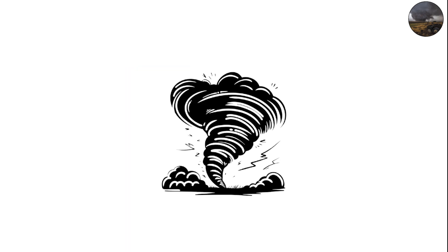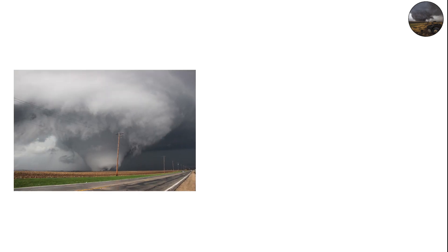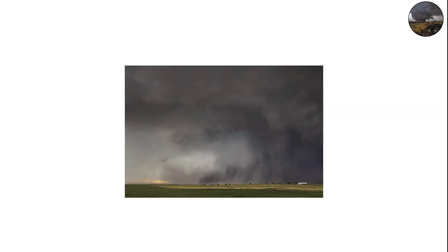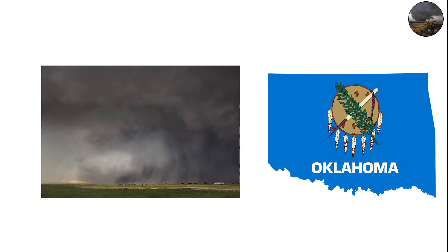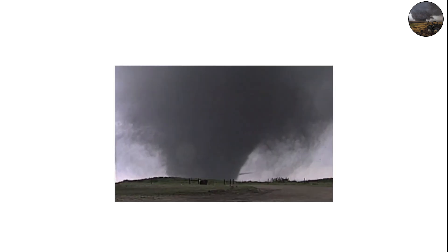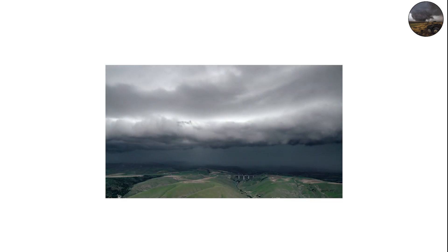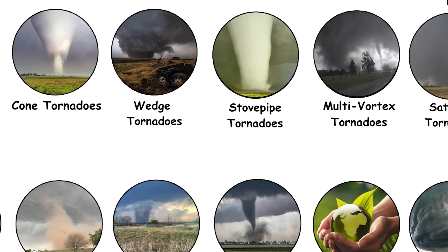These tornadoes are often the most violent, with EF4 or EF5 strength winds exceeding 200 miles per hour. Famous examples include the 2013 El Reno tornado in Oklahoma and the 1997 Jarrell, Texas tornado — both known for their enormous width and devastating power.